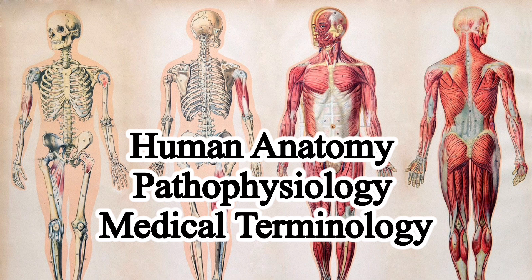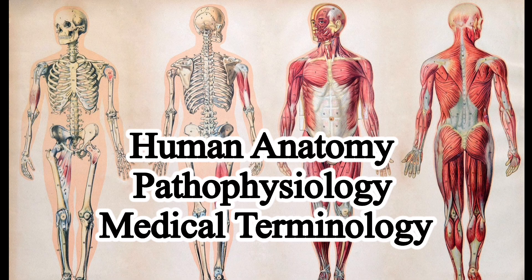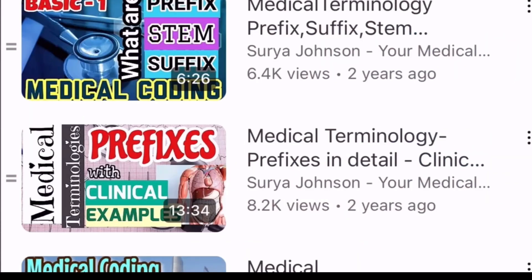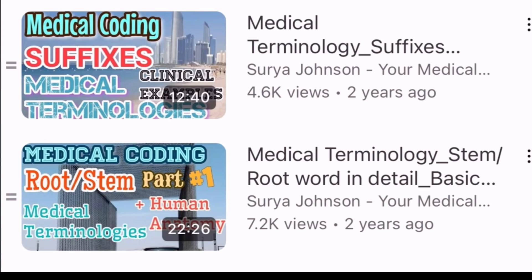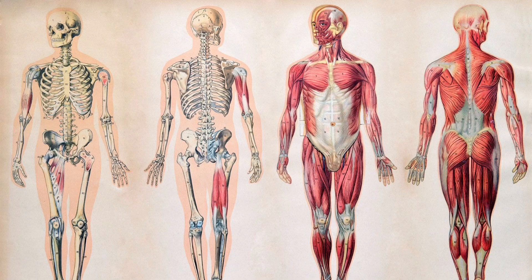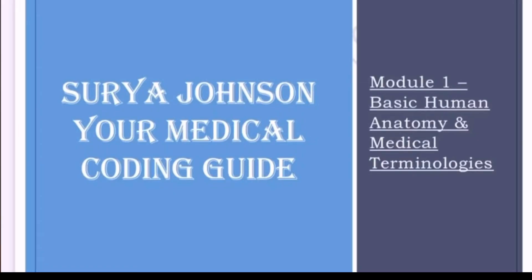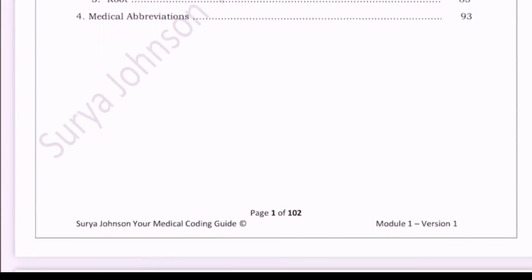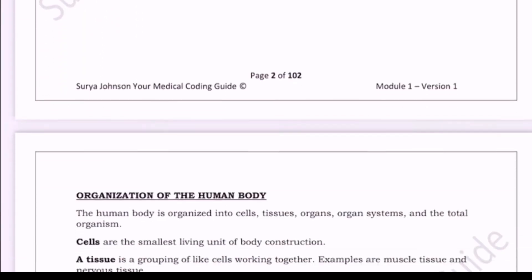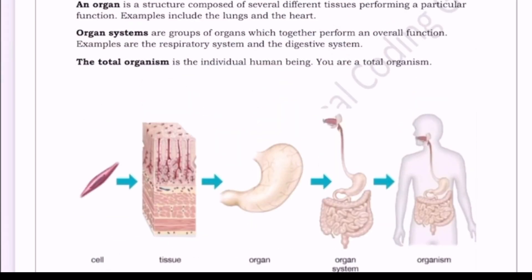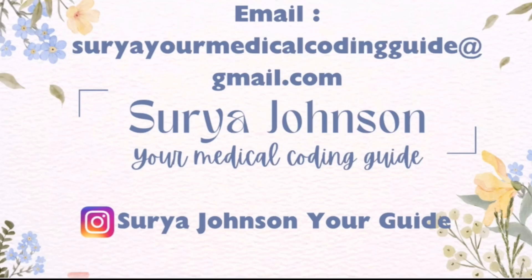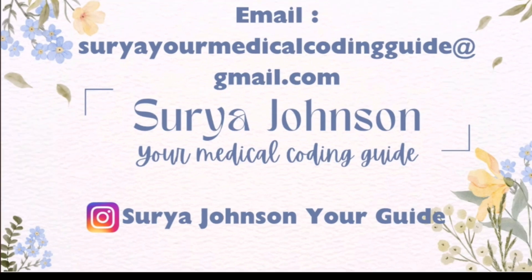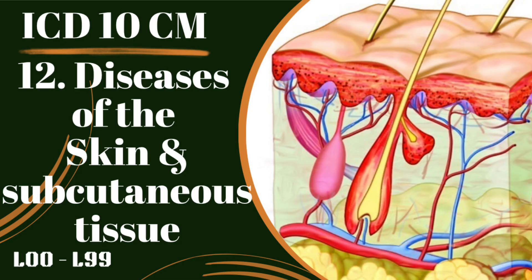I've already posted videos on anatomy based on prefix, suffix, and root words — you can watch those and find the links in the description box below. All coders should know basic anatomy. If you want to know in depth what a medical coder should learn in the anatomical part, you can email me. I have a 100-plus page PDF dedicated completely to anatomy and pathophysiology, with medical terminologies, pictures, disease conditions, and common diseases per anatomical structure.